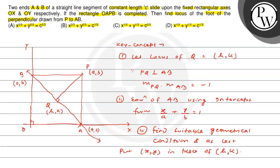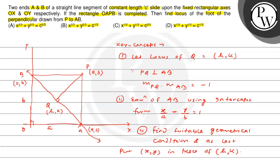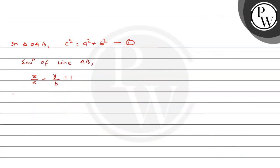Point A is at distance a on OX and B is at distance b on OY. In right-angle triangle OAB, C² = A² + B². This is equation 1. Now the equation of line AB using intercept form is x/A + y/B = 1. Since Q(H, K) lies on AB, it satisfies this equation, giving H/A + K/B = 1, which means BH + AK = AB. This is equation 2.